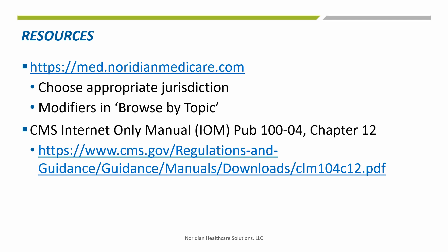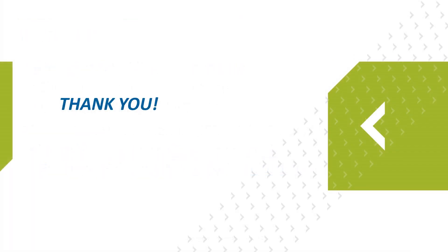Here are a couple of resources that can be reviewed for appropriate modifier usage. The Noridian website has a modifier section that can be found under Browse by Topic — scroll through and click on the modifier link for additional information. CMS also has a manual section in Publication 100-04, Chapter 12 for Global Surgery and Other Modifiers. Thank you for taking the time to listen to our tutorial. Continue your learning experience by referring to additional recordings available on the Noridian website or YouTube channel.